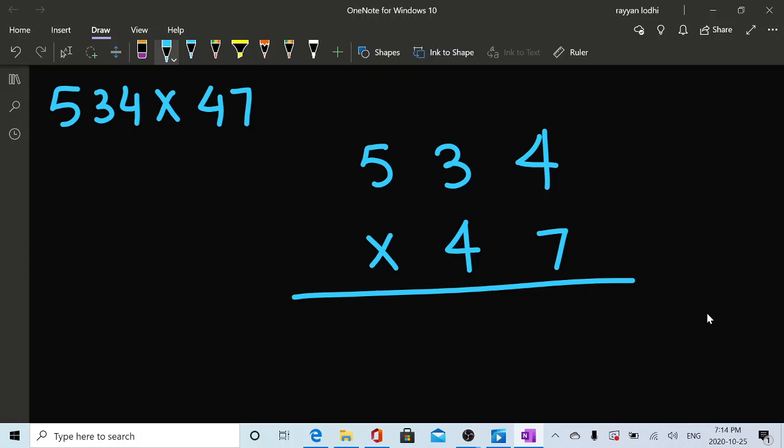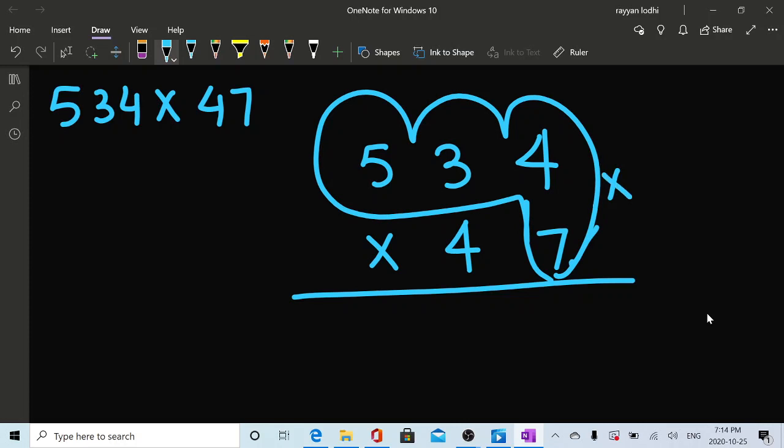Same idea. Pick this seven. The job for this seven starts. And the job for this seven is to get multiplied by first this four, then with this three, and then with this five. Seven times four is 28. What will come here? Same idea. Eight will come here. And where will this two go? Here.